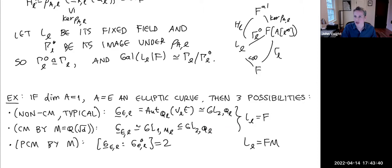Already in the elliptic curve case we saw two important points: endomorphisms play a role in the connected component story, and the field L_ℓ — which a priori depended on the prime ℓ — did not as an extension of F.